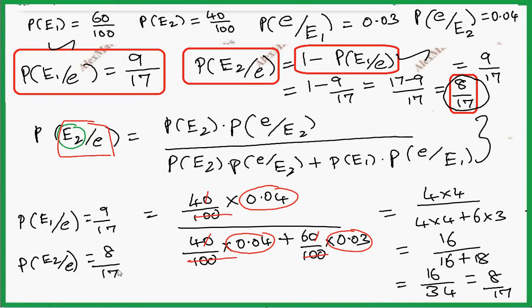So P of error given Engineer 1 is more than P of error given Engineer 2. That's why the error was done by Engineer 1. That's why we guess Engineer 1.